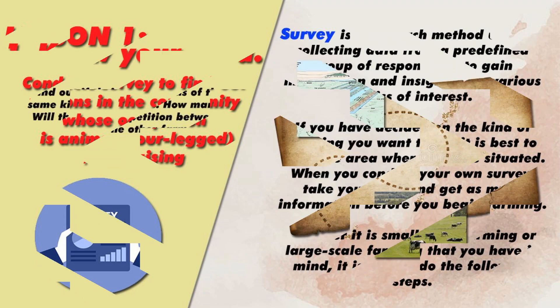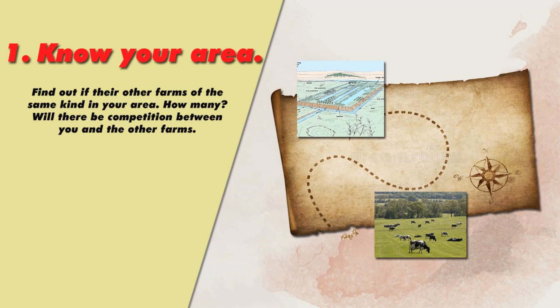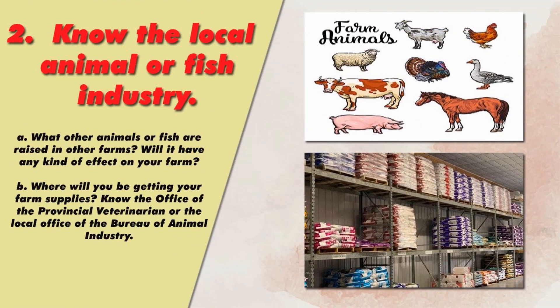Steps: One — Know your area. Find out if there are other farms of the same kind in your area. How many will there be? Will there be competition between you and the other farms? Two — Know the local animal or fish industry. What other animals or fish are raised in other farms? Will it have any effect on your farm? Where will you be getting your farm supplies? Know the office of the provincial veterinarian or the local office of the Bureau of Animal Industry.